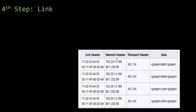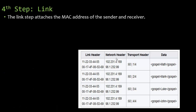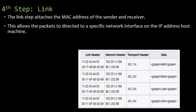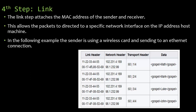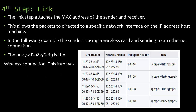Now that we know what a MAC address is, we can do step four — the link layer. It attaches the MAC address of both the sender and the receiver. We have the IP address, but we also identify the actual hardware device because each hardware device has a MAC address. This allows the packets to be directed to a specific network interface on the IP address host machine — we're sending it to a piece of hardware, such as a wireless card sending to an Ethernet connection.